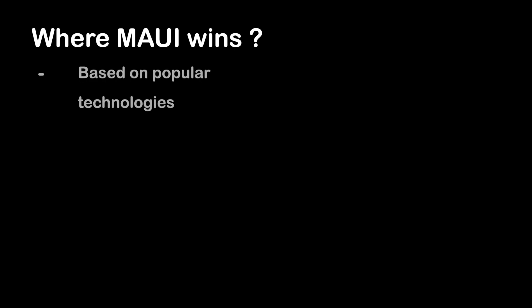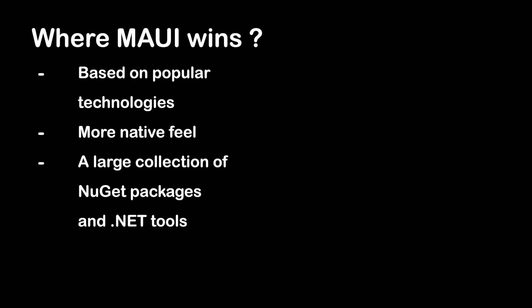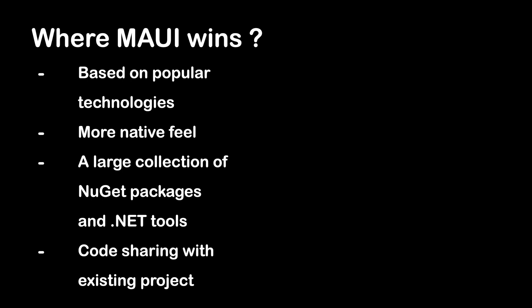So where does MAUI win compared to Flutter? .NET MAUI is younger than Flutter, but it's based on popular technologies. Thanks to that, finding talent from a large pool of .NET developers, and its similarities with Xamarin, should be more accessible. Next, MAUI provides a more native feel, thanks to its use of native components for all supported platforms. However, this can also be a disadvantage depending on preferences, as it could cause visual inconsistency between different platforms. Additionally, MAUI has a large collection of NuGet packages and .NET tools available, though it takes some time to add proper support and port all Xamarin packages to take full advantage of this ecosystem. Lastly, if a project already uses .NET technologies, it should be possible to share code between the backend and the application, thanks to C# being used across all technologies.